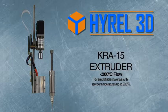The KRA 15 extruder is a stainless steel syringe for emulsifiable materials with service temperatures of up to 200 degrees C.